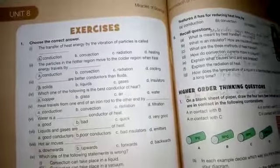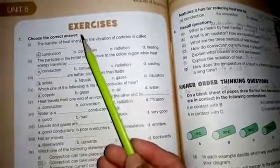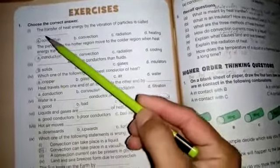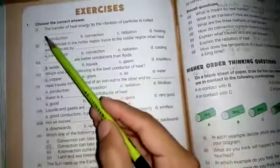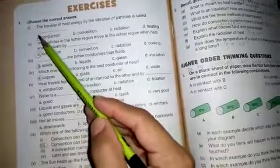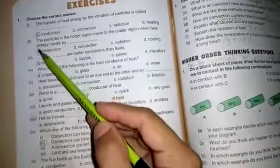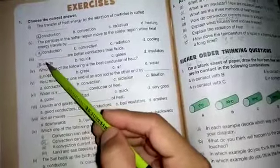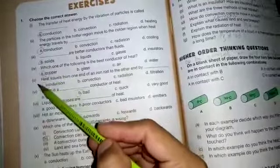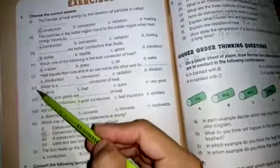Now I'm going to share the answers of the exercise of Unit Number 8. Question number one is choose the correct answer. We have 10 MCQs. The answer or the right option of the first MCQ is A conduction. Number two is A conduction, number three A solid.